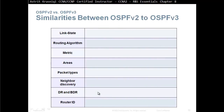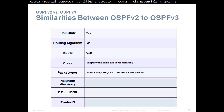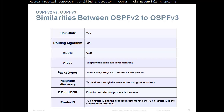The similarities between OSPF version 2 and version 3: they are both link-state routing protocols, both run the Shortest Path First algorithm, and both use cost as the metric, which is derived from bandwidth. They both use areas and support a two-level hierarchy. The packet types are the same — the 5 different packet types: Hello, DBD, LSR, LSU, and LSAck. Neighbors transition through the same states using hello packets, and the DR and BDR function and election process is the same.